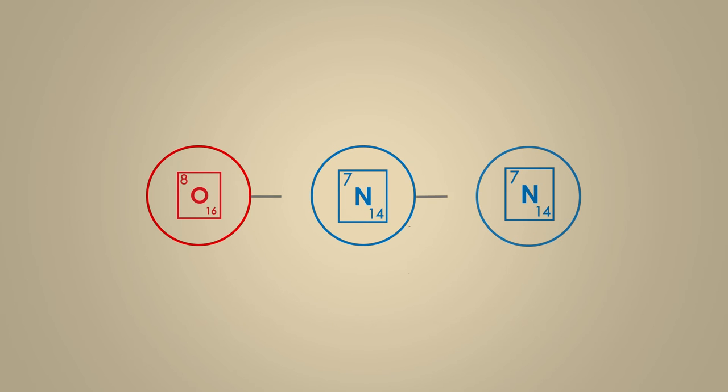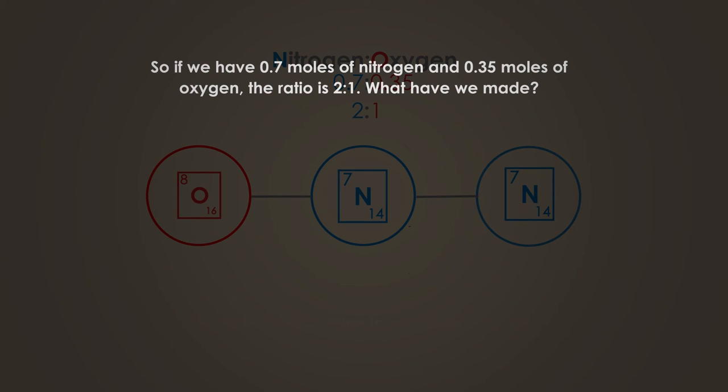Remember, 1 mole of gas occupies 24 decimetres cubed at room temperature and pressure. So if we have 0.7 moles of nitrogen and 0.35 moles of oxygen, the ratio is 2 to 1. What have we made?